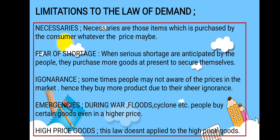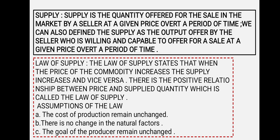Now I am going to talk about supply. Supply is the quantity offered for sale in the market by a seller at a given price over a period of time. We can also define supply as the output offered by a seller who is willing and capable to offer for sale at a given price over a period of time.